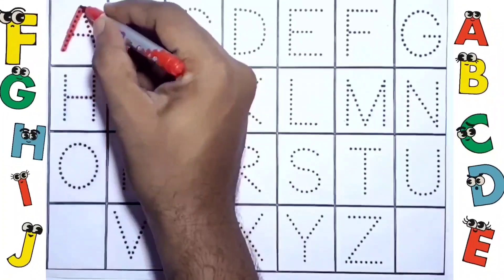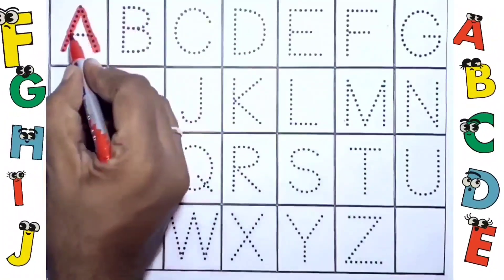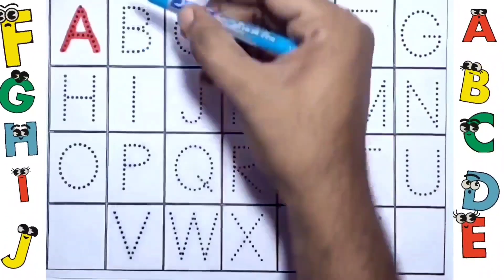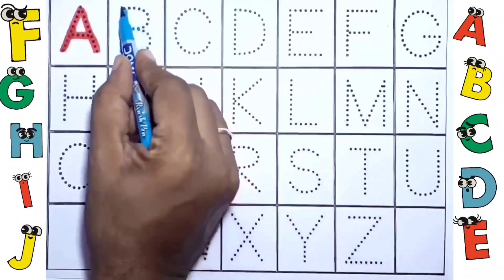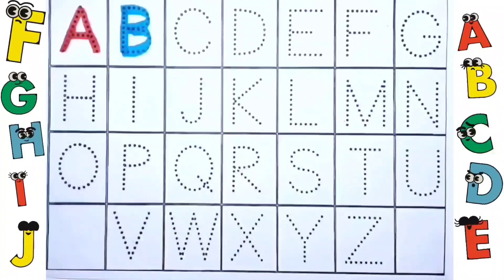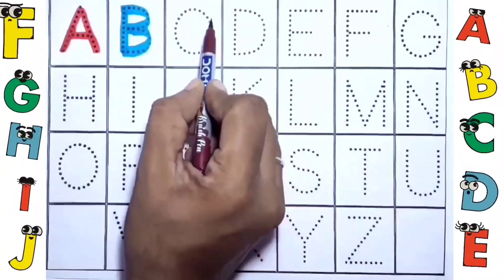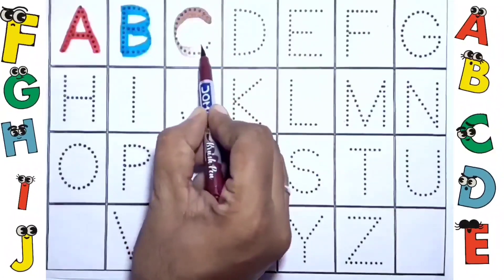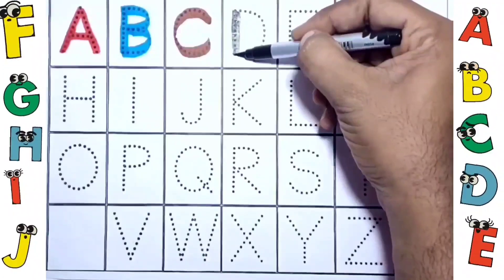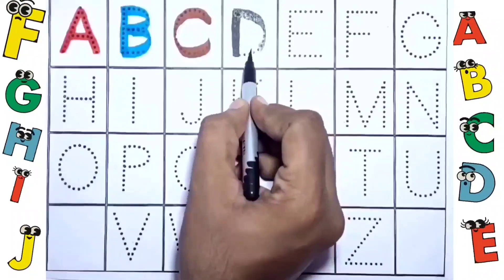A. This is A. A for apple. B. B for ball. Letter B. C. C for cat. D. D for dog.